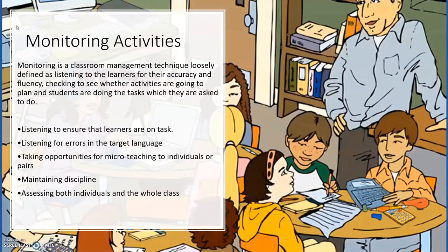Monitoring activities. Monitoring is a classroom management technique loosely defined as listening to learners for their accuracy and fluency, and checking to see whether activities are going to plan and students are doing tasks which they are asked to do. Sometimes in spite of giving clear instructions, students may have difficulties following them. So at that point teachers should walk around the classroom, sit with pairs or groups, and monitor whether activities are staying on plan. The general purposes of monitoring are: listening to ensure that learners are on task, listening for errors in target language, taking opportunities for micro teaching, maintaining discipline, and assessing both individuals and the whole class.